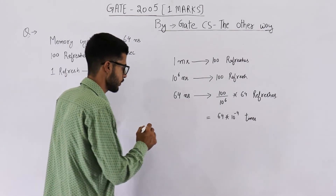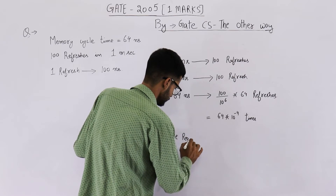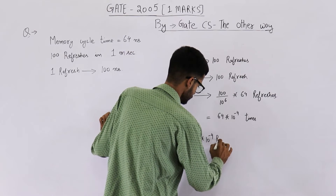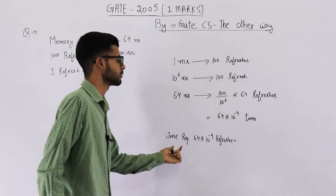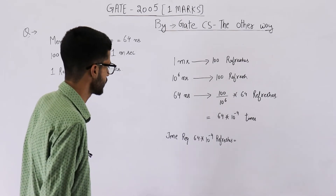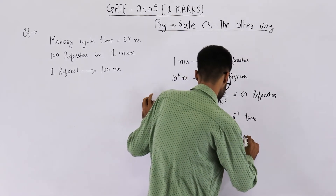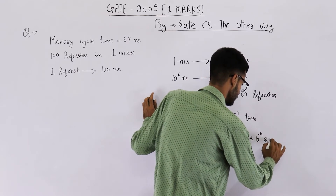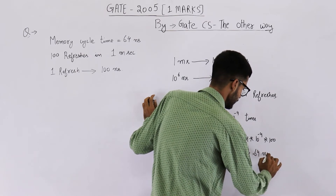So the time required for these many refreshes — time required for 64 into 10 raised to the power minus 4 refreshes — will be 64 into 10 raised to the power minus 4, multiplied by 100. This comes out to be 0.64 nanoseconds.